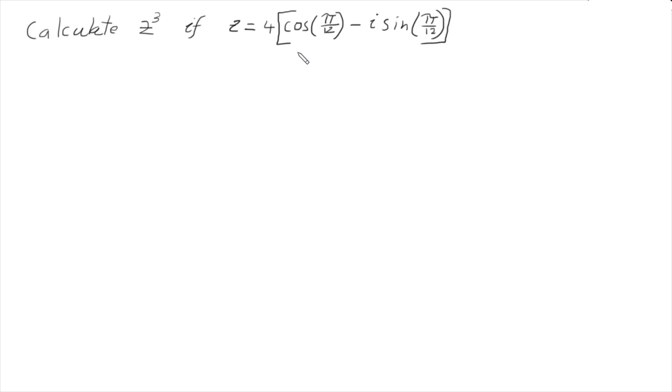De Moivre's theorem says that if I've got a complex number raised to a power, then I raise its magnitude to its power and multiply its angle by that power.